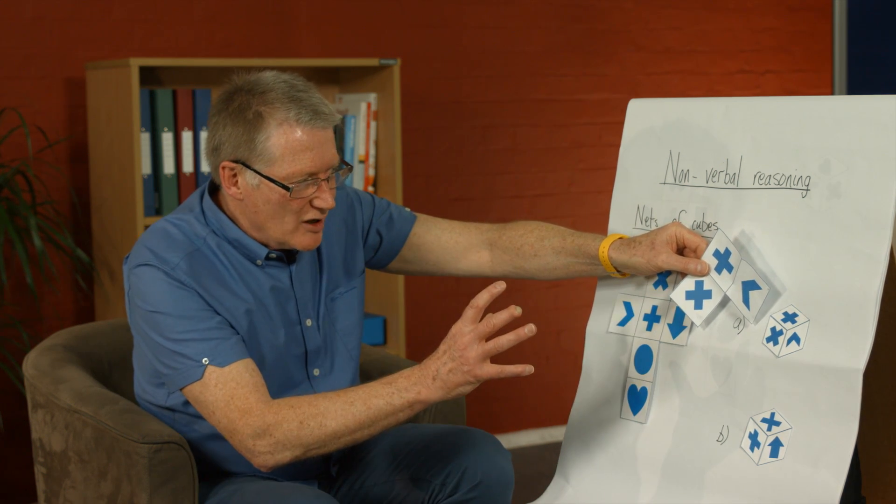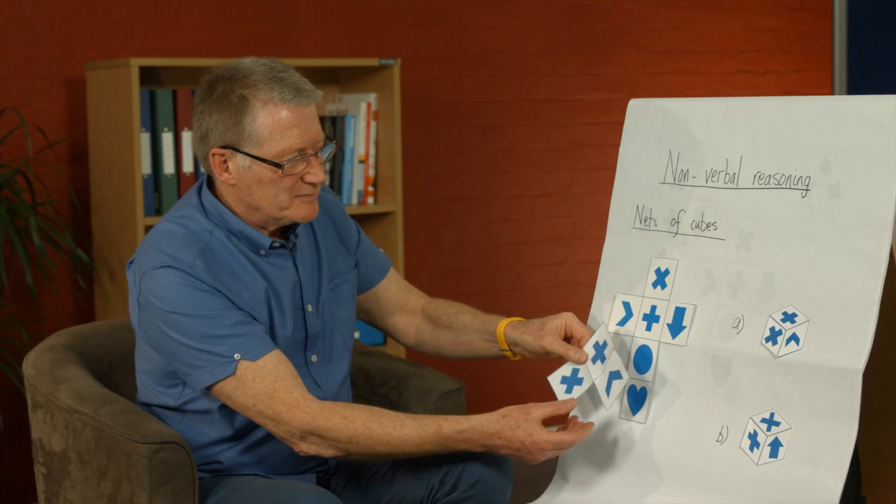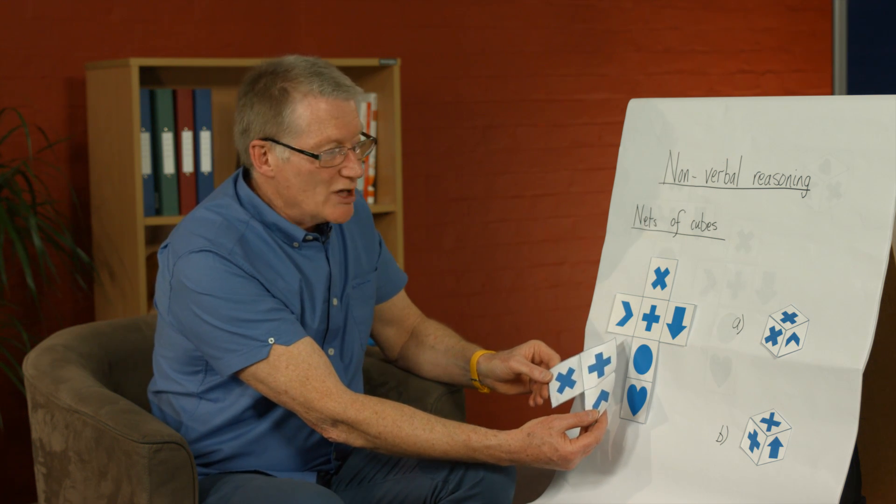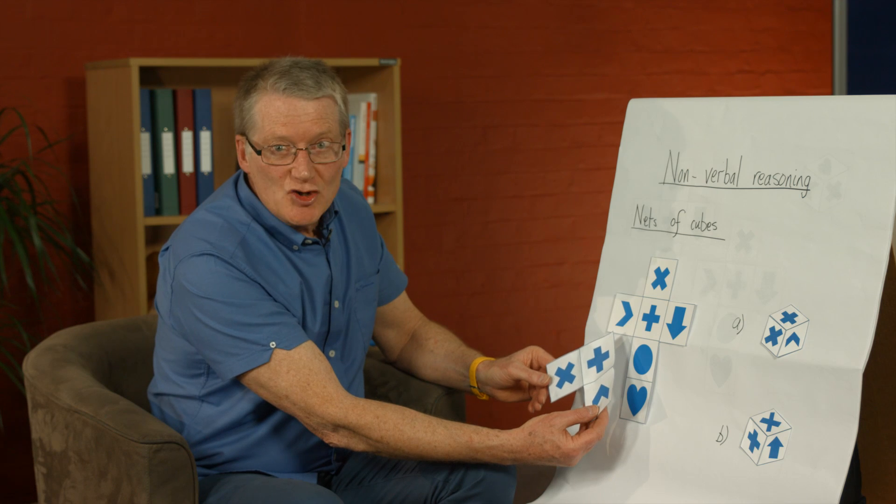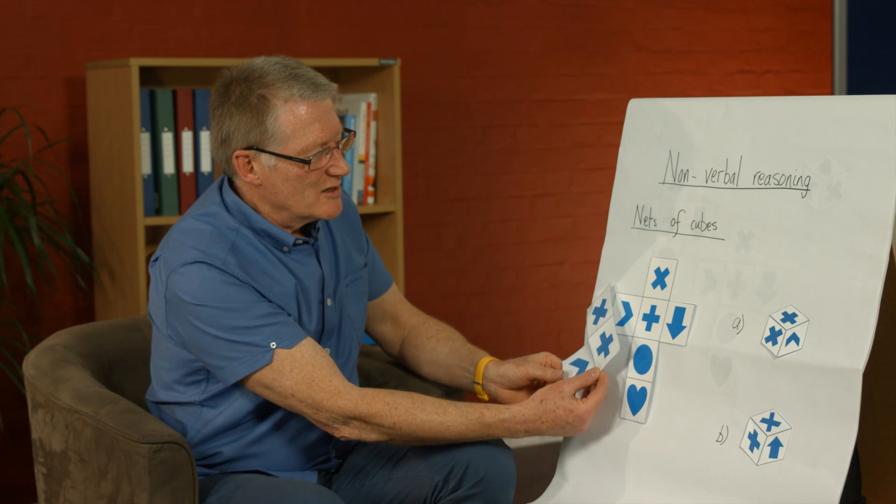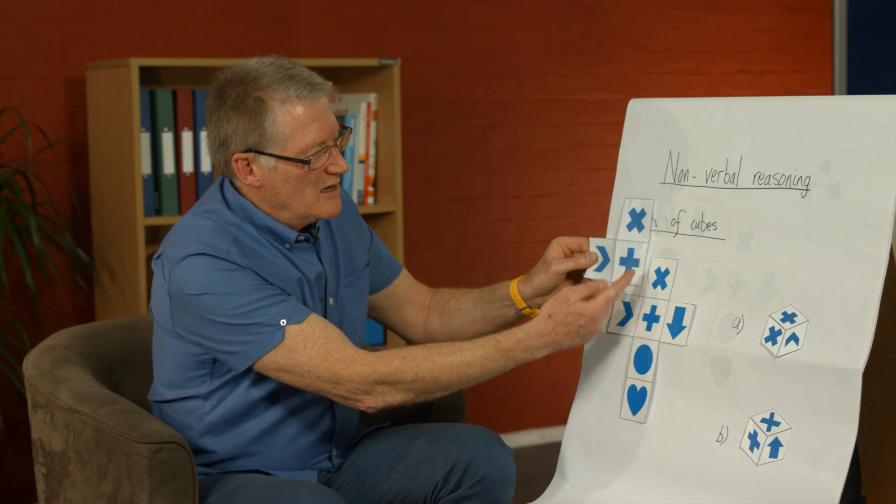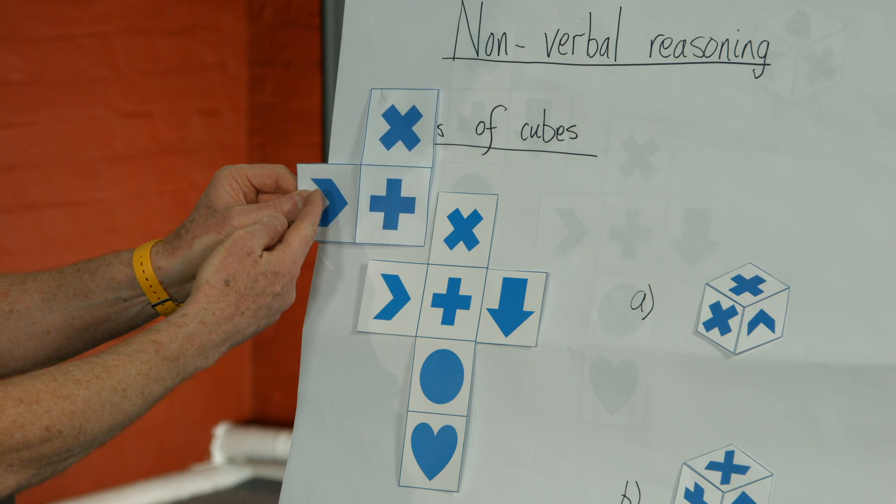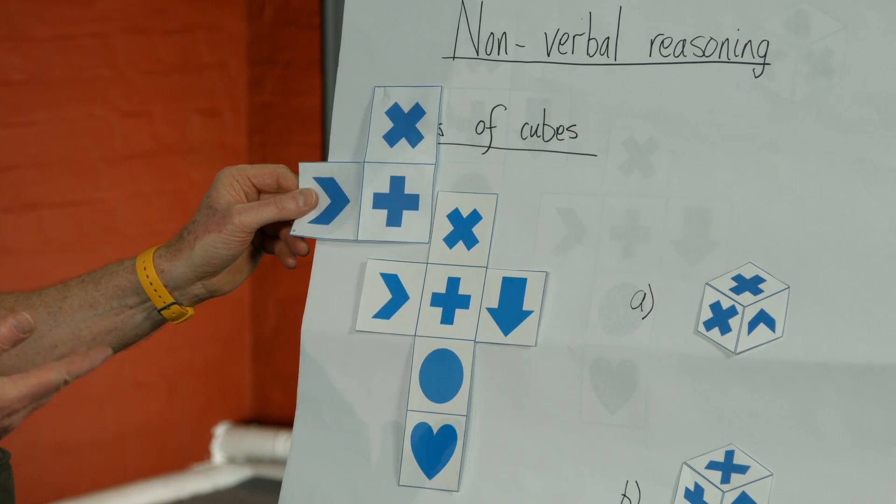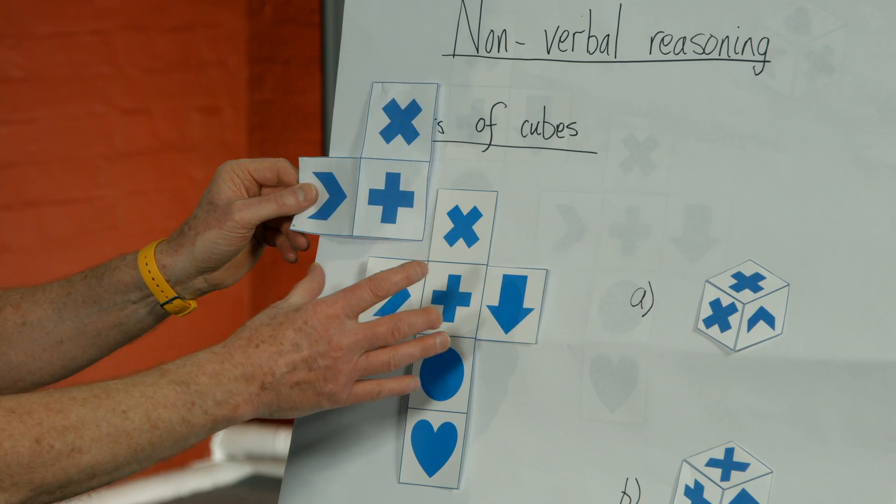So if you can visualize that opening up and then move this over to the main net and try and line it up to see whether the shapes are in the same rotation. Let's do that. The multiply sign has got to go to the top. And you can see they're in the same positions as the net. And so we can say that this cube is made from this net.